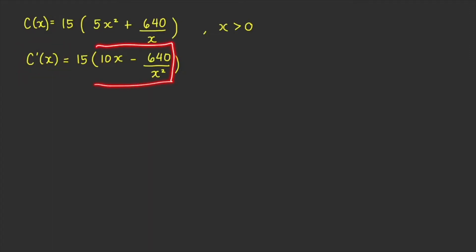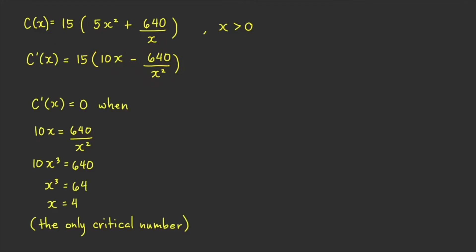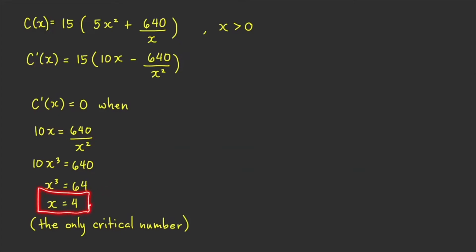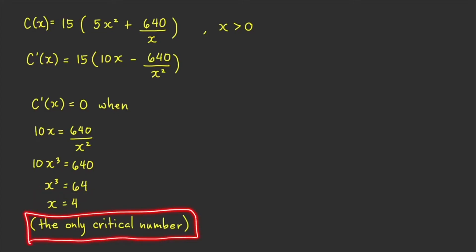Setting C'(x) = 0 means 10x = 640/x². Cross-multiplying gives 10x³ = 640. Dividing both sides by 10 gives x³ = 64. Taking the cube root of both sides gives x = 4. This is the only critical number of C.